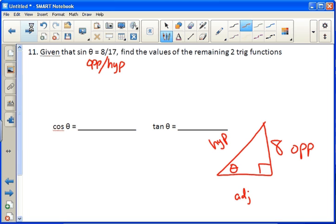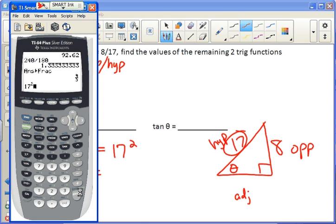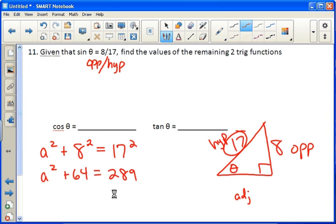Now we can use the Pythagorean theorem to figure out what the adjacent side would be. We'll get a squared plus 8 squared equals 17 squared. Notice, 17 has to go in for the C because it's the hypotenuse. Doesn't matter what you put the other two as, A or B, but the hypotenuse has to be your C. So we get a squared plus 64 equals, I think 289. I'm going to double check. Okay, 289.